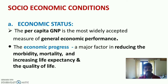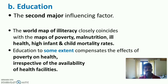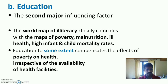Economic status: per capita GNP is the most widely accepted measure of general economic performance. Economic progress is a major factor in reducing morbidity and mortality and increasing life expectancy and quality of life. Education is the second major influencing factor. The world map of illiteracy closely coincides with the maps of poverty, malnutrition, ill health, and high infant and child mortality rates. Education, to some extent, compensates the effects of poverty on health, irrespective of the availability of health facilities.